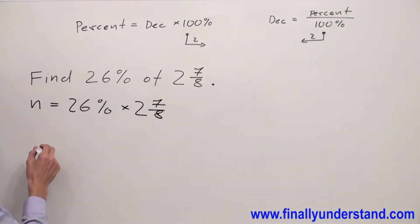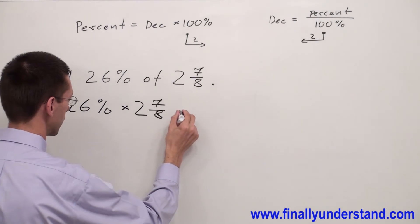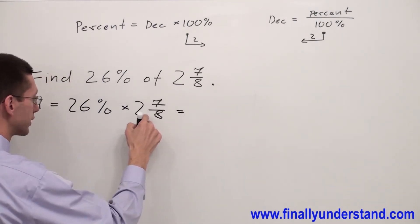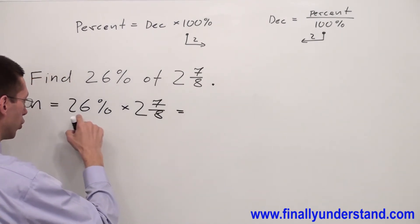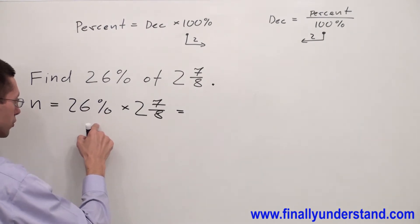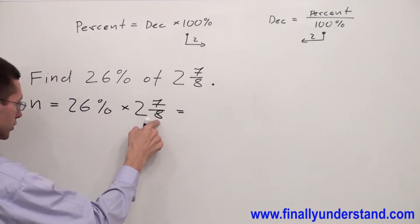First, I'm going to convert the mixed number to an improper fraction. Also, 26% I'm going to convert to an improper fraction because I'm dealing with fractions.